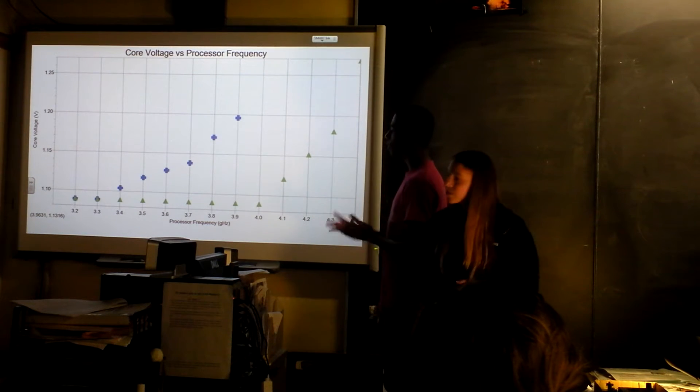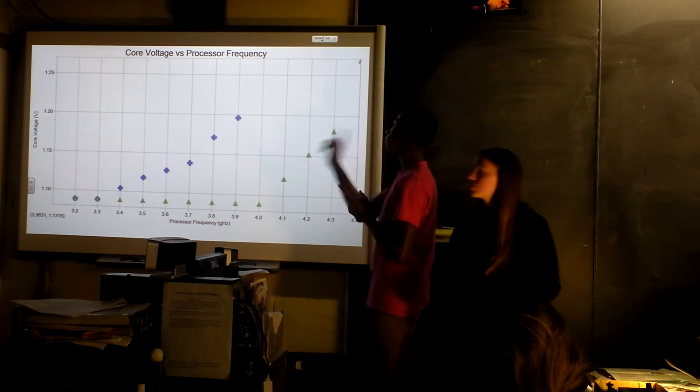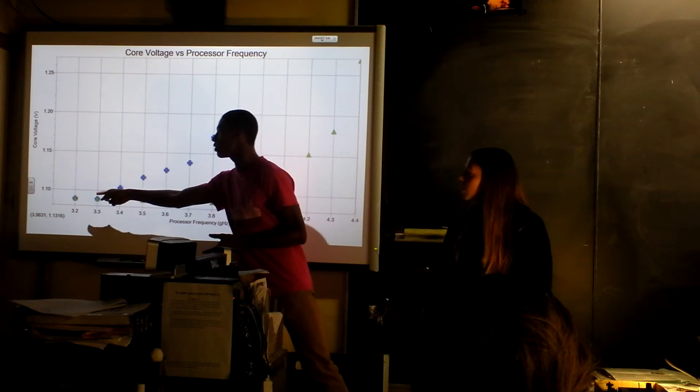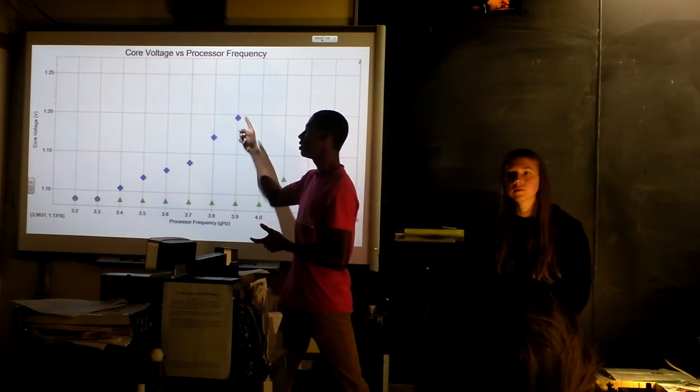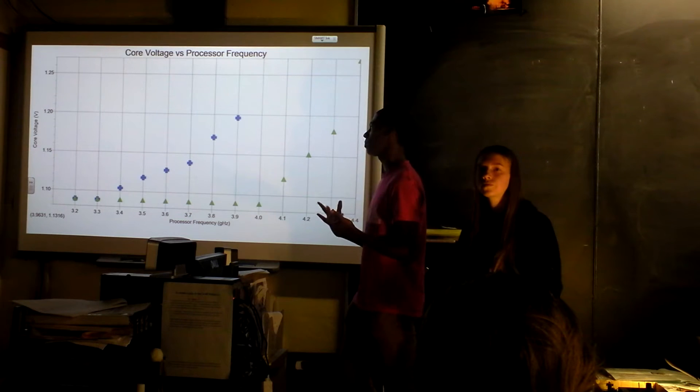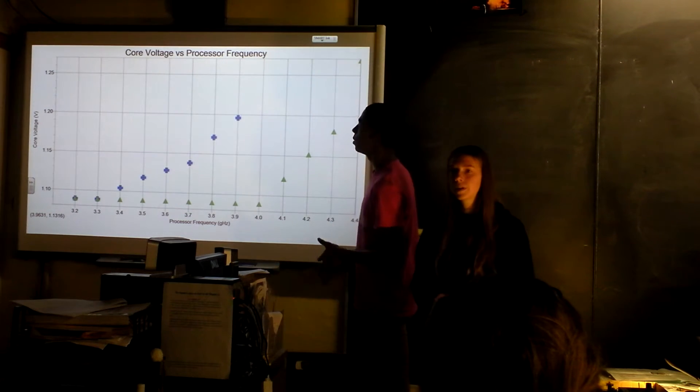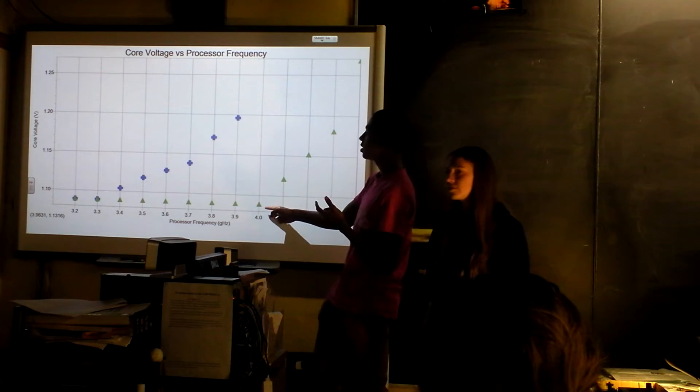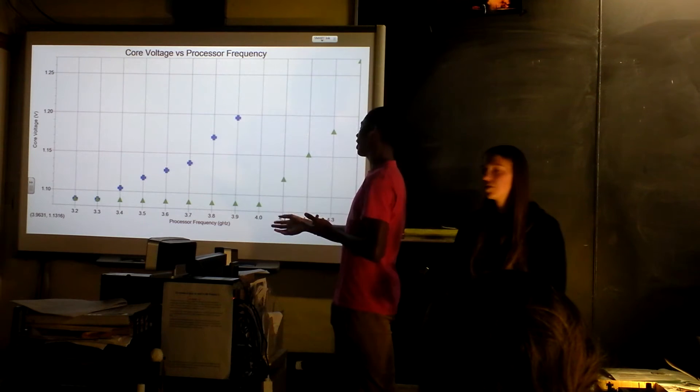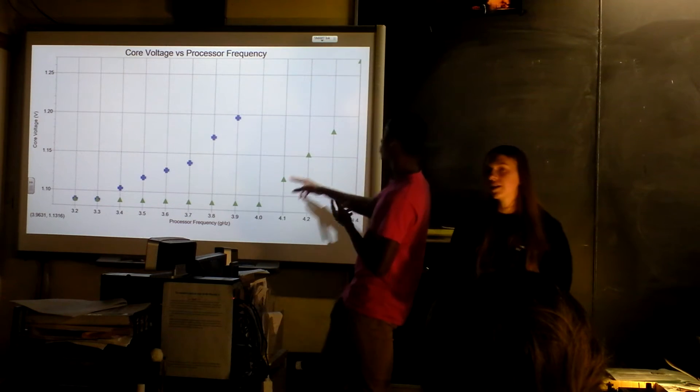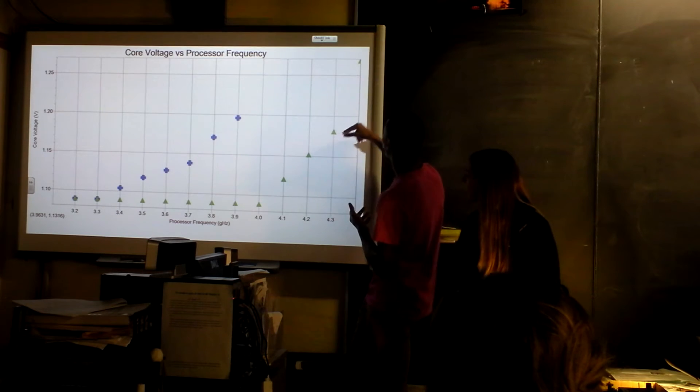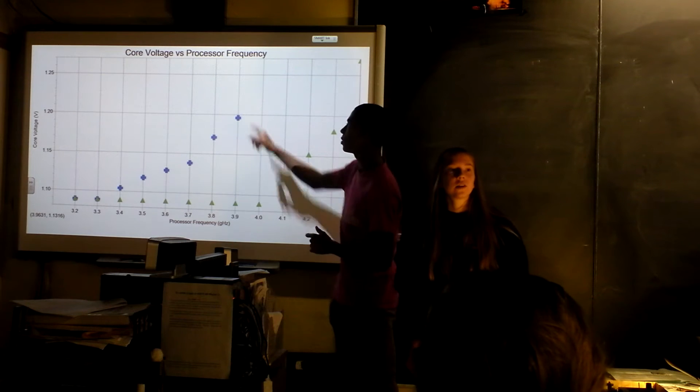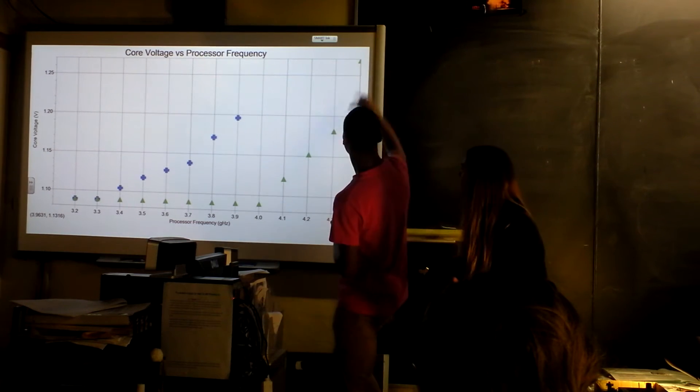And this graph is core voltage versus processor frequency. Blue is the turbo method, and green is the manual overclock. And what's really cool about this is with the turbo method, you have to start increasing the voltage really early on to get the computer to boot and work properly. But with the manual one, we didn't have to increase the voltage until we got to 4 gigahertz, which is significant. That's way higher than this one even got. And then for 4.4, we had to go way higher. And that's higher than the manufacturer said it would be able to go. The manufacturer says that it'll stop at 3.9 and can't go any higher. But we got it to go to 4.4.